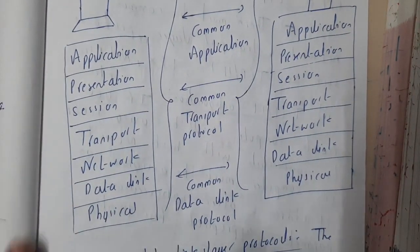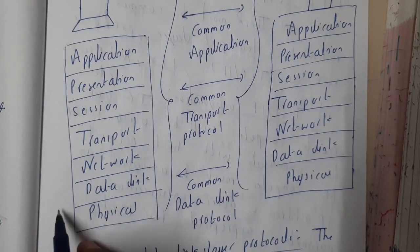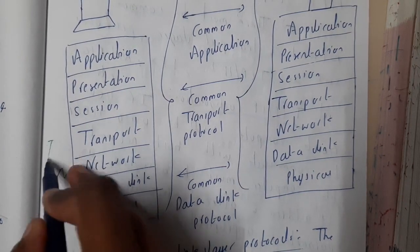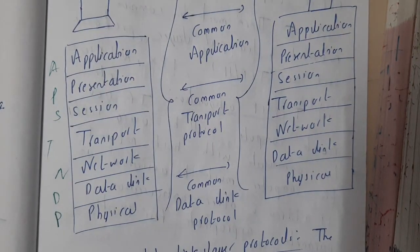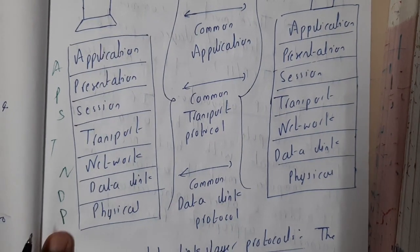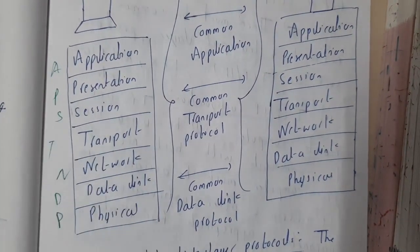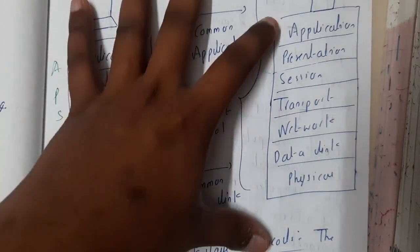If you take the example of the OSI model — this is the OSI model. If you don't remember the shortcut to remember it, you can use the mnemonic: 'Please Do Not Tell Secret Passwords To Anyone.' There are multiple statements to remember this table, and you can use this trick.